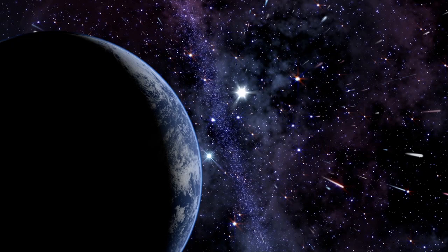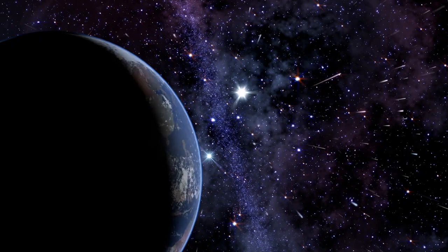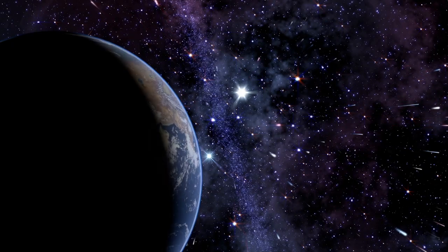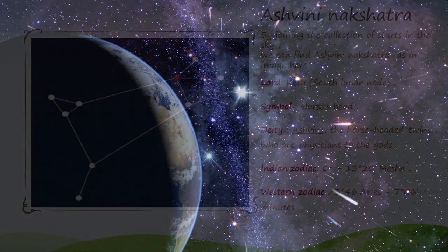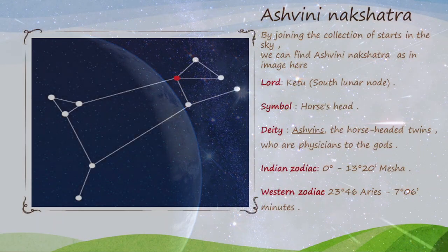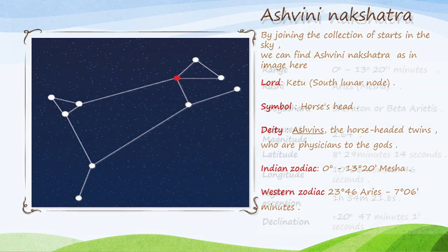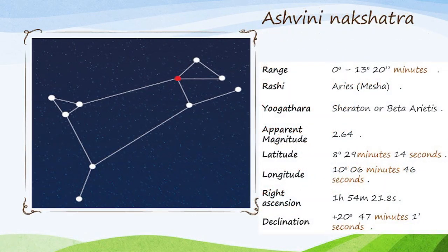Ashwini Nakshatra Lord: Ketu, the South Lunar Node. Symbol: Horse's Head. Deity: Ashwins, the horse-headed twins who are physicians to the gods. Indian Zodiac: 0 degrees to 13 degrees 20 minutes Mesha. Western Zodiac: 23 degrees 46 minutes Aries to 7 degrees 06 minutes Taurus. By joining the collection of stars in the sky, we can find Ashwini Nakshatra as shown in the image.